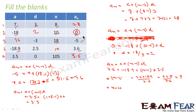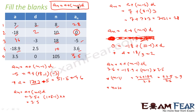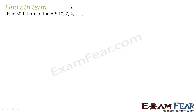Thus we have filled all the blanks. It is very simple — just use the formula a_n = a + (n-1)d. Please remember this formula; it is a very important formula, where a_n is the nth term, a is the first term, n is the term number, and d is the common difference.